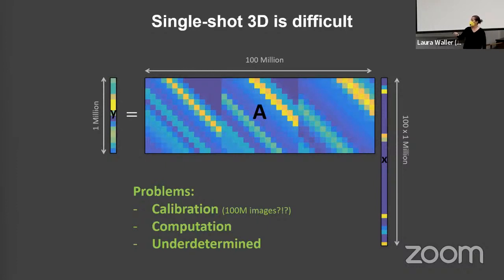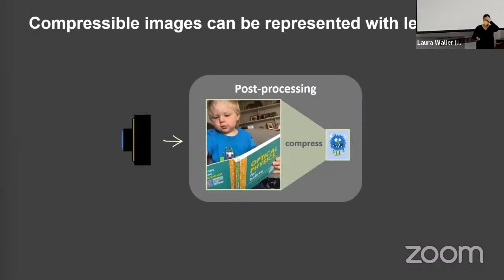So we want to take a single 2D measurement and solve for 3D now. We have a forward model that's just scaling at different depths and then shifting when things move laterally. But now I'd like to solve for, say, a million pixels or a megapixel image at every depth plane for 100 different depth planes. So now I'm trying to solve for 100 times more things than I measured. The shift invariance effect, this convolution approach, basically fixes all of the calibration and computation problems. It's still very underdetermined. We have a lot less data than we're trying to reconstruct information. So how are we going to do that? What I'm going to use is compressed sensing.